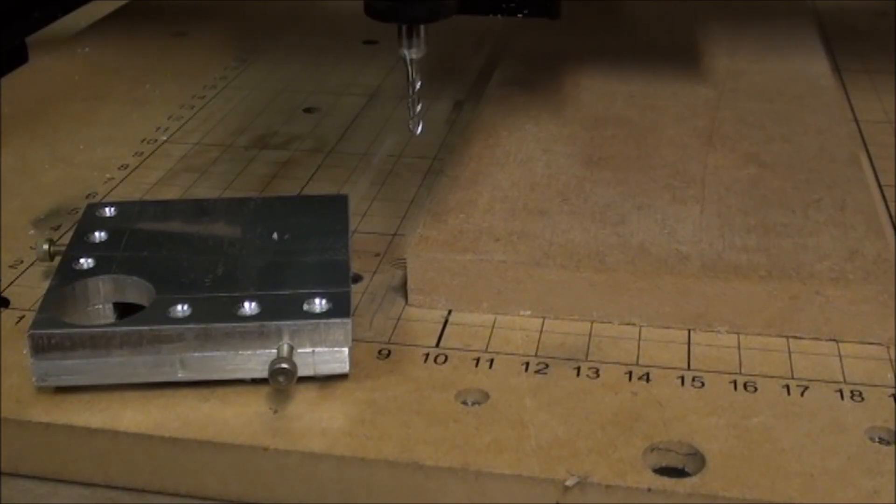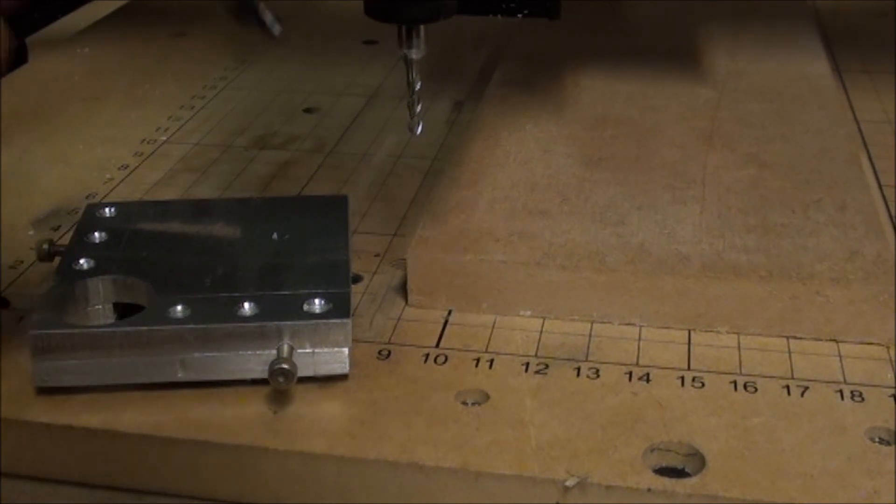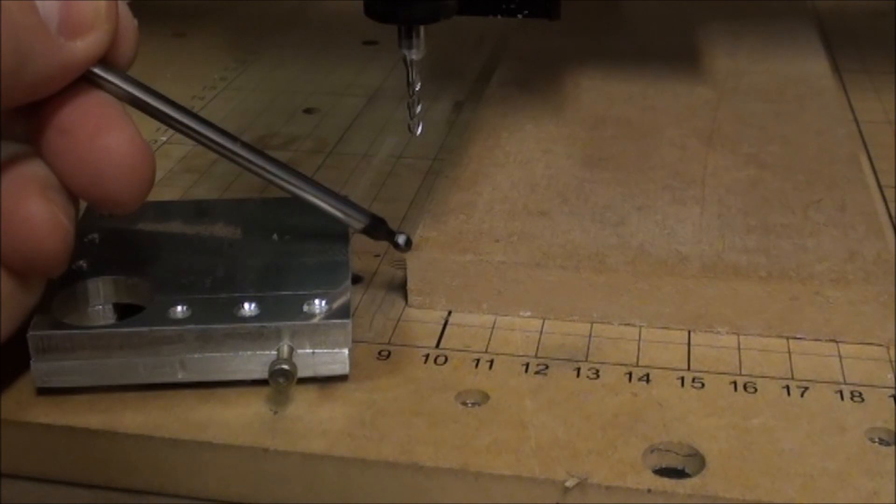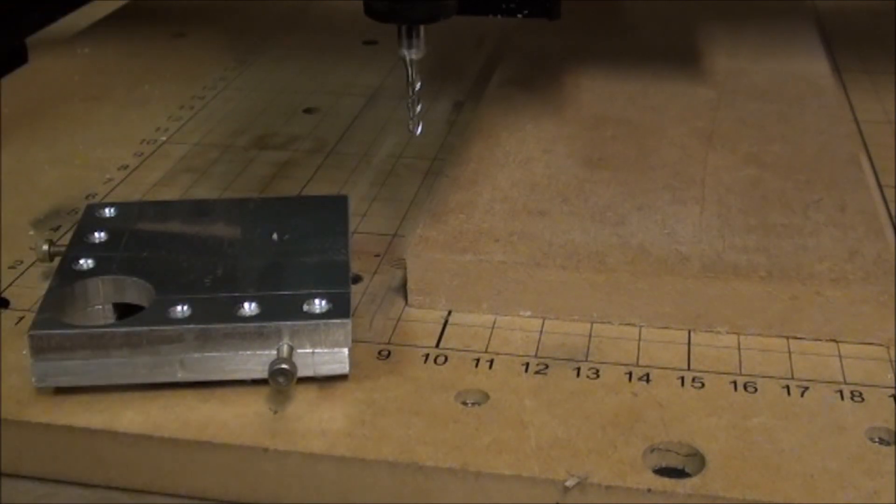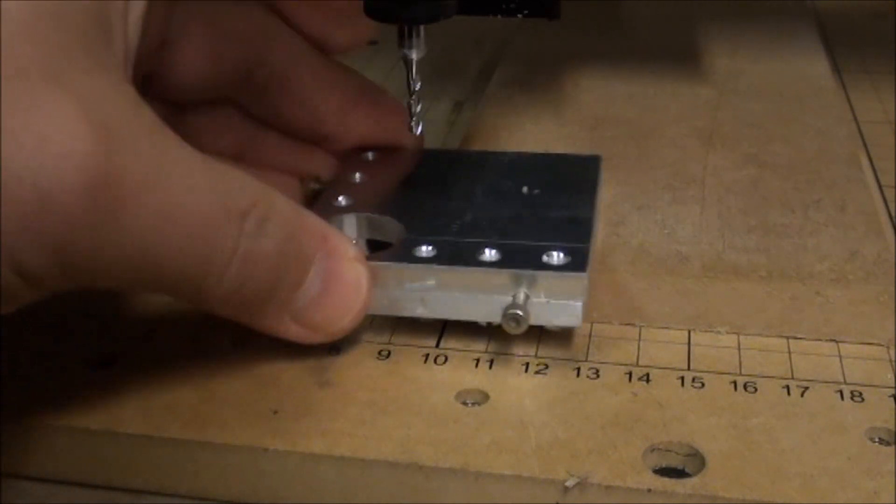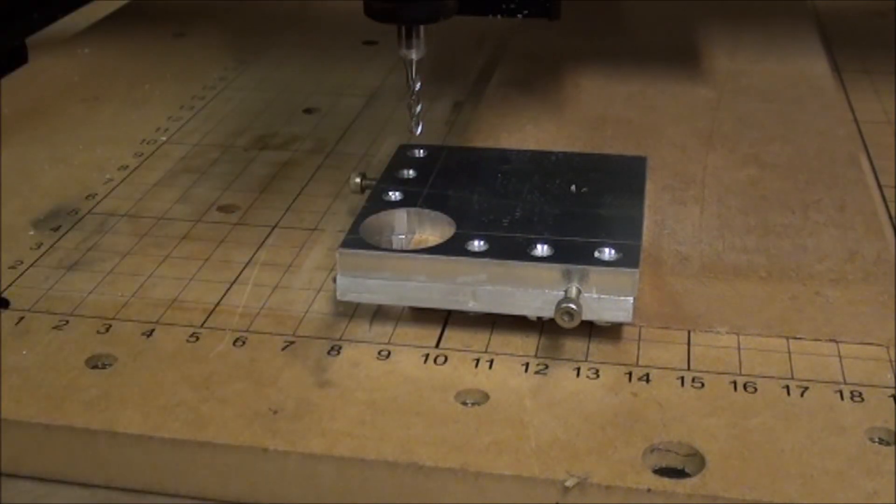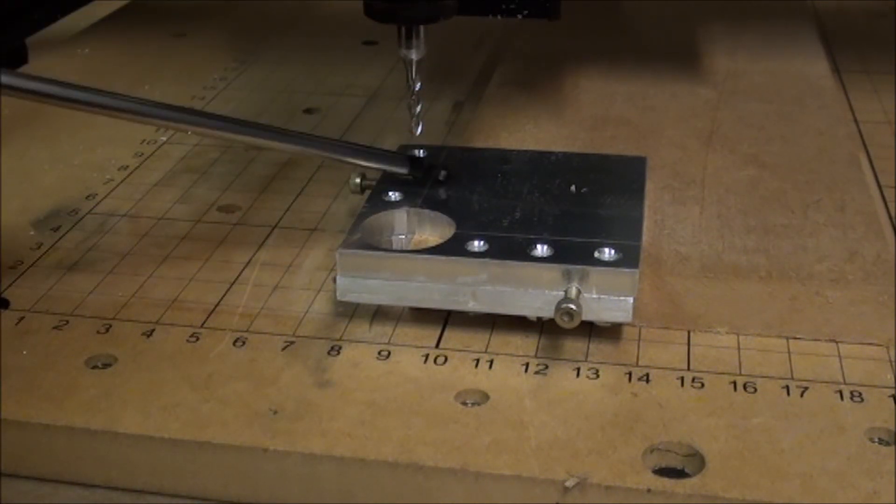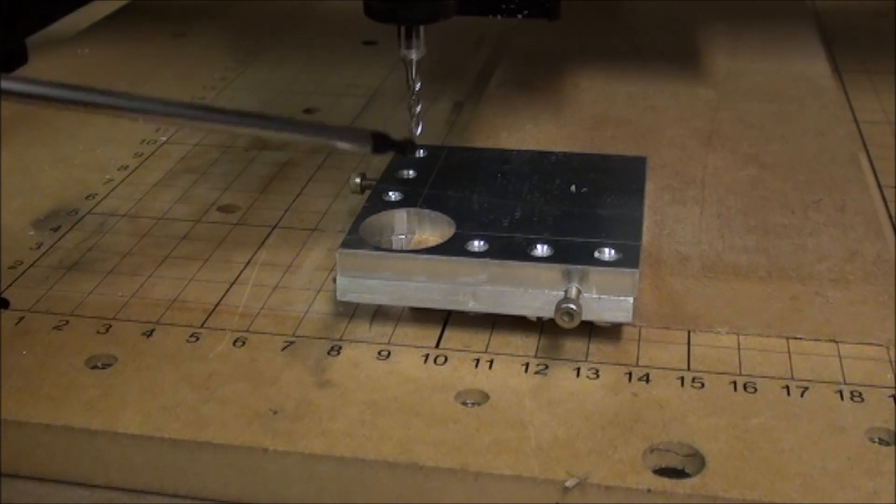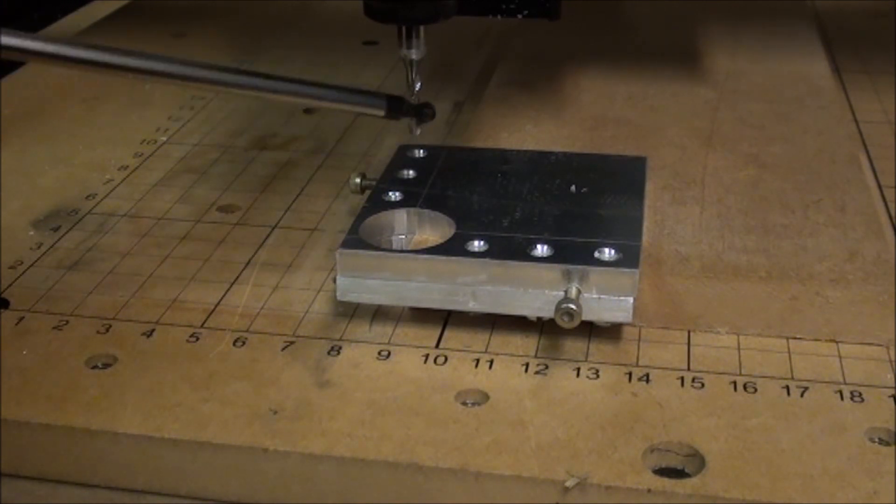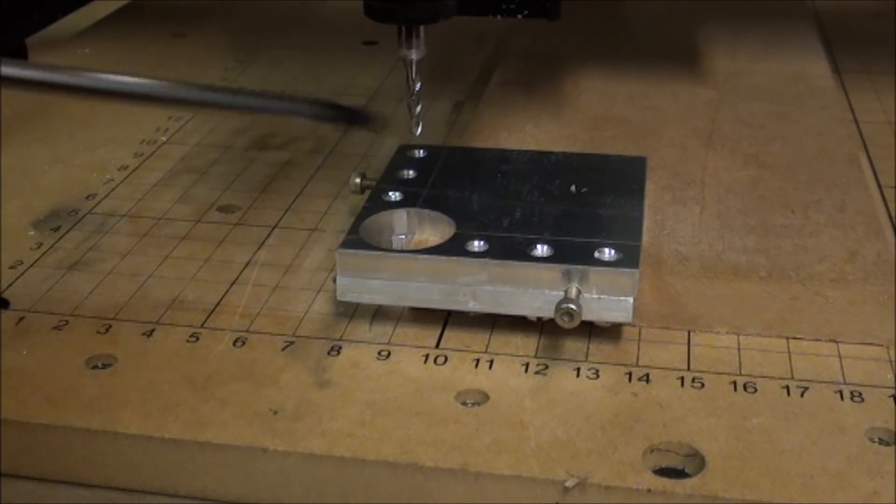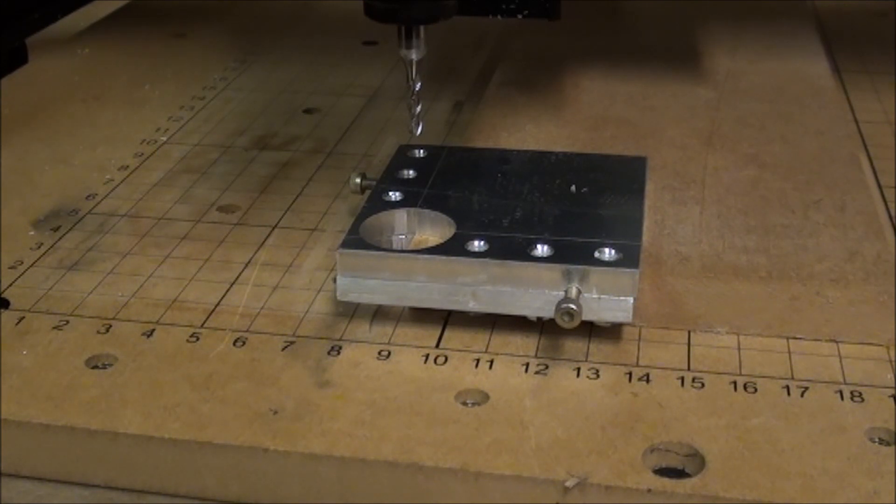I want to use my zero and corner finding tool to find the exact corner here on this piece of MDF. The first step will be to find the surface, so I will go and touch the surface here with the bit and then of course add the six millimeter that the thickness is to set my z-height.